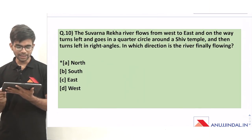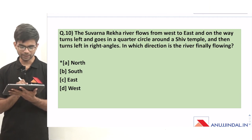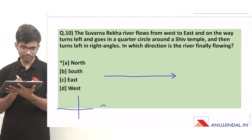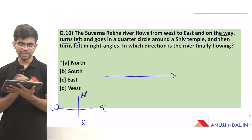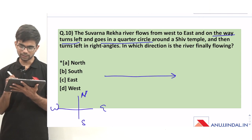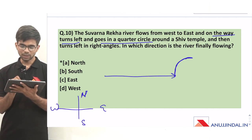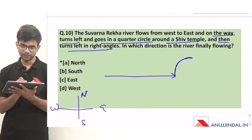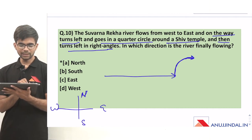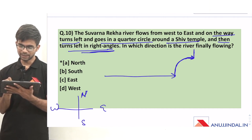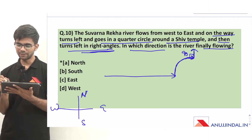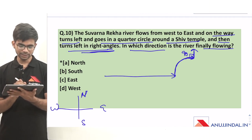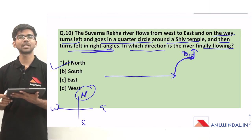Question 10: The Suvarna Rekha river flows from west to east, then turns left and goes in a quarter circle around the Shiv temple, and then turns left in a right angle — 90 degrees, turning upwards. The river is finally flowing in the north direction. The correct option is option A, north.